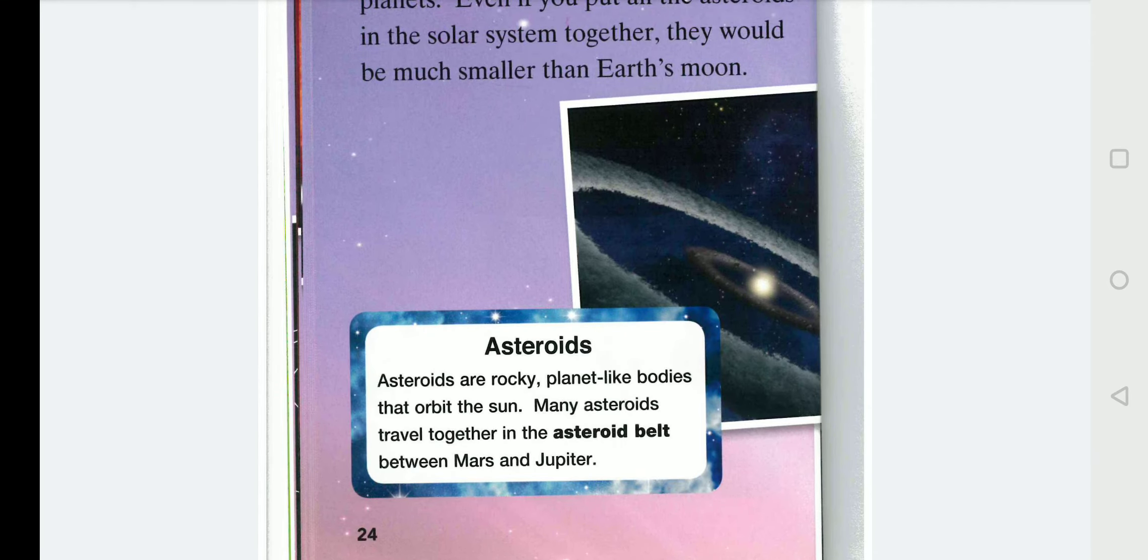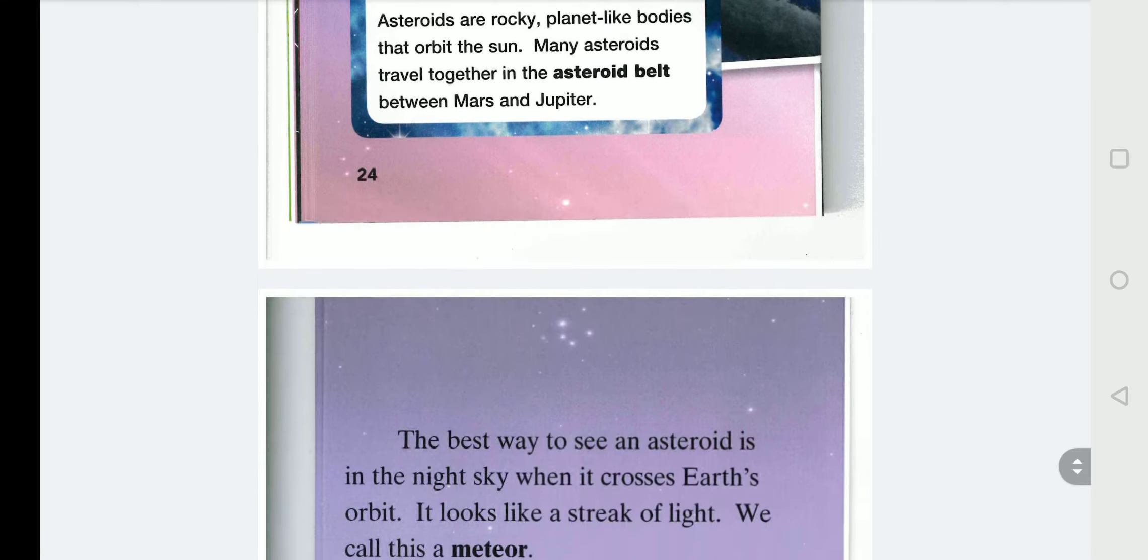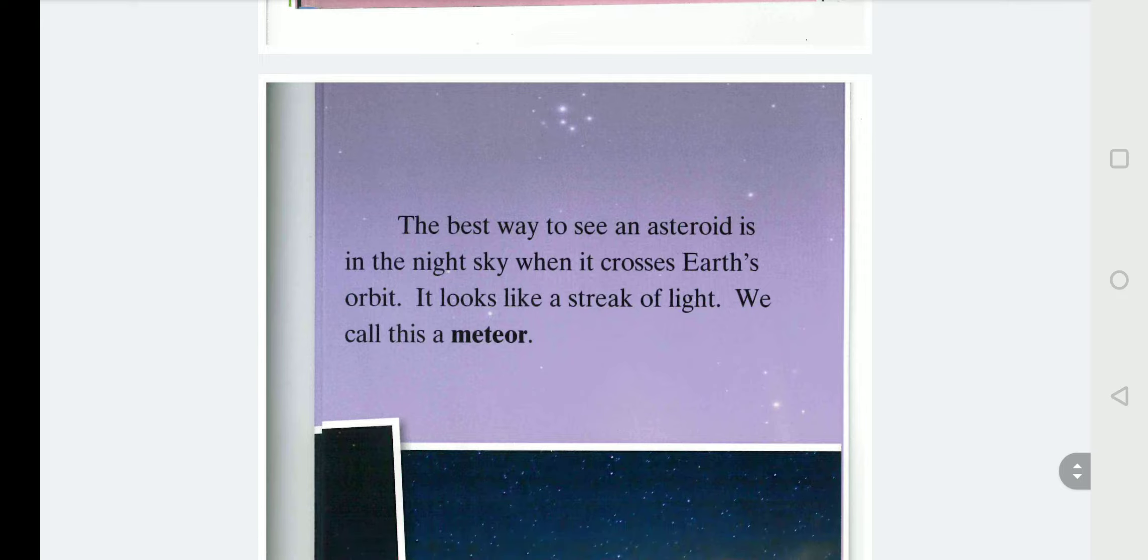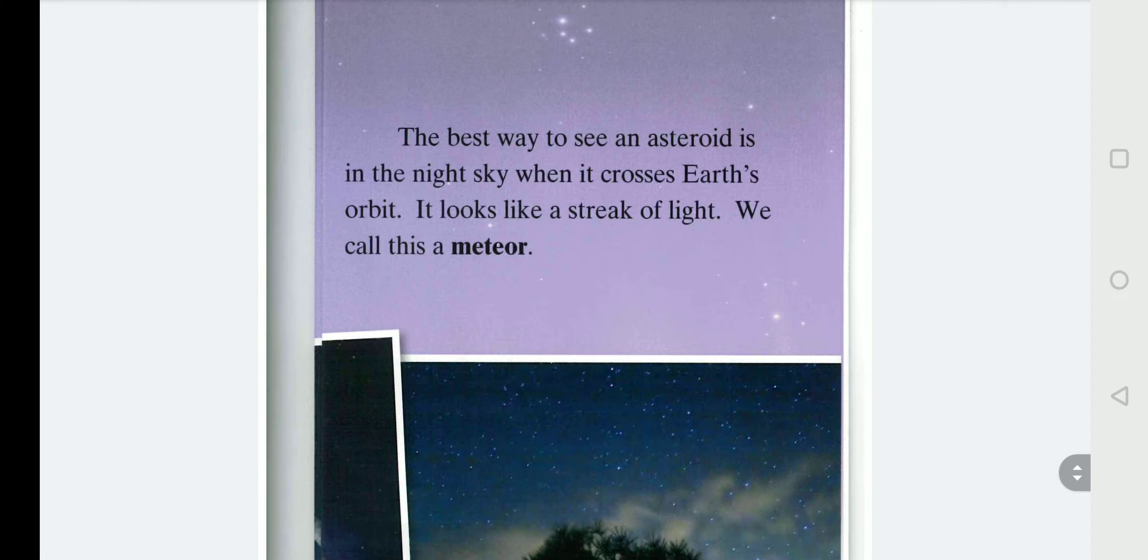Asteroids are rocky, planet-like bodies that orbit the Sun. Many asteroids travel together in the asteroid belt between Mars and Jupiter. The best way to see an asteroid is in the night sky when it crosses Earth's orbit. It looks like a streak of light. We call this a meteor.